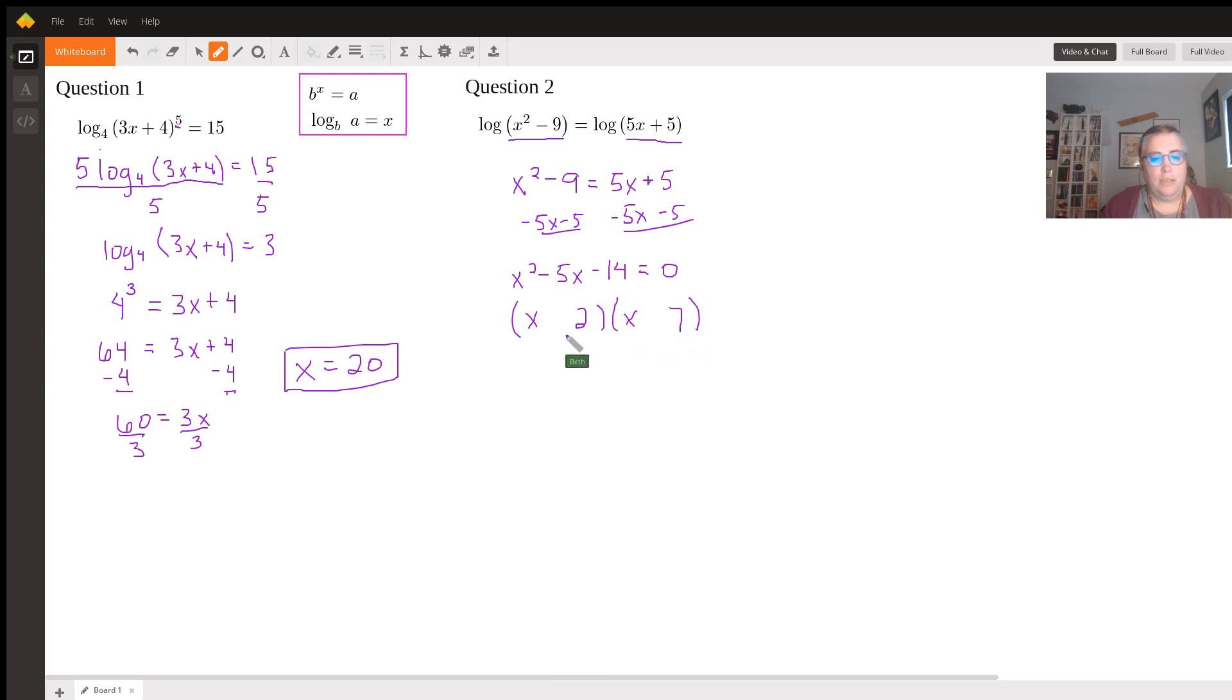And it's negative 5, so we know that the larger number is the negative number. So this equals 0. Therefore, x equals negative 2 and 7, because x plus 2 equals 0 and x minus 7 equals 0. So both of those answers make this equation true.